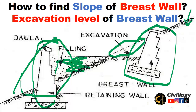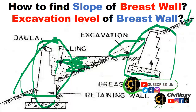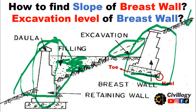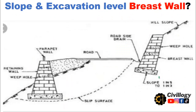One important thing to note is that the base of a breast wall is in the form of a slope. As you can see here, the wall is tilted slightly backward or towards the hill. This is done to make it more stable. The wall constructed along the hillside is a breast wall, and the base is in the form of a slope to make it more stable against sliding.